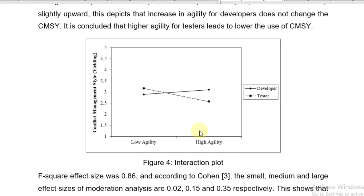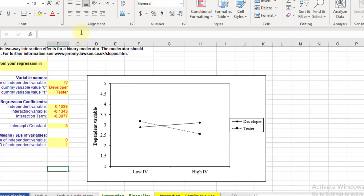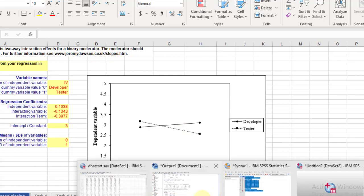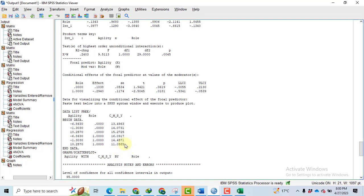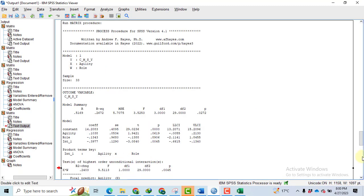Now the next step is making such graphs. You have two options. You can make this graph in the SPSS as well as an Excel file that you can get from the internet. That is, you can download such files from www.jeremydawson.co.uk. However, first of all, we go towards the SPSS that how we can make such graphs. So double click on the results of the SPSS.